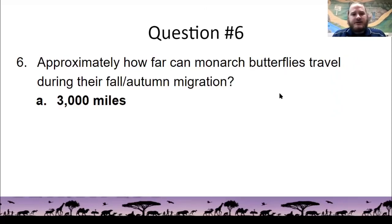Question number six, approximately how far can monarch butterflies travel? Up to 3,000 miles. So pretty incredible. And for this one, if you guessed anywhere between 2,500 and 3,500, you'll get credit. And on the last one, I should have said that if you guessed anywhere between 11 and a half and 12 and a half for one or the other, you would get credit.